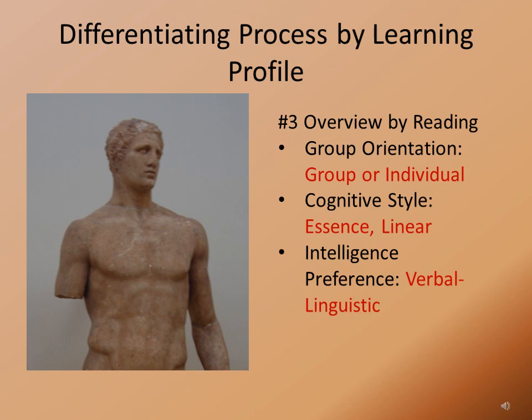Three activities are provided, and all links will be included at the end of this presentation. For activity one, students will engage in a muscle game with a group orientation toward independent work, a cognitive style that deals with parts to whole, and an intelligence preference for the spatial and visual. In activity two, students will engage in an interactive Know, Want to Know, and Learn chart — or KWL — grouping and categorizing muscles based on prior knowledge. Their group orientation is toward group work, their cognitive style is creative, and the intelligence preference is interpersonal and analytic.